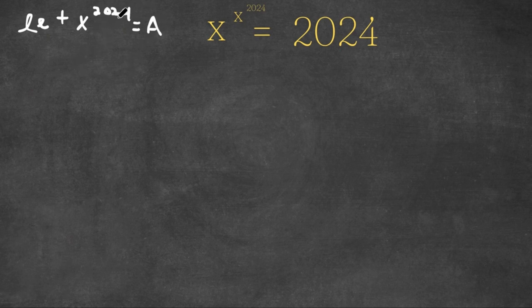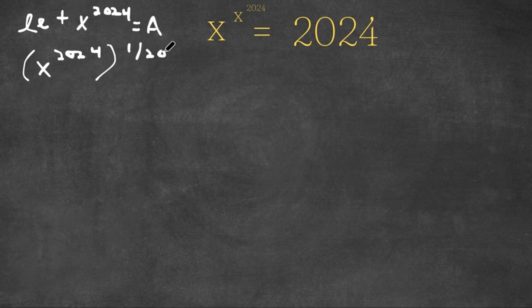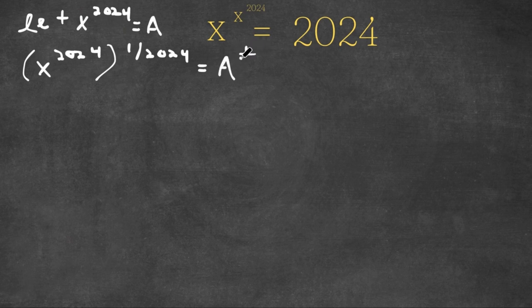So now I'm going to take the power of 1 over 2024 on both sides. So now we have x to the power of 2024, to the power of 1 over 2024, is equal to a to the power of 1 over 2024.